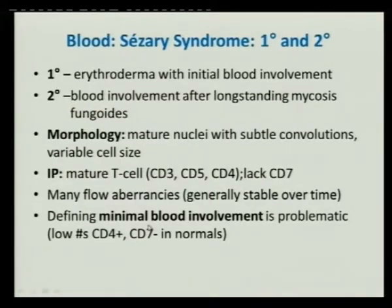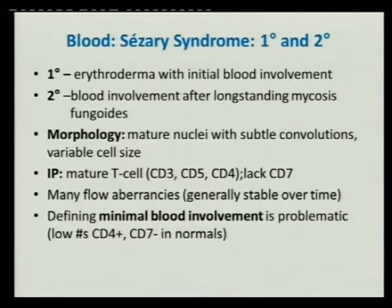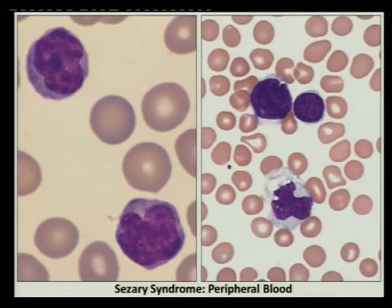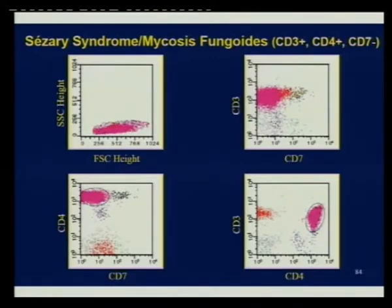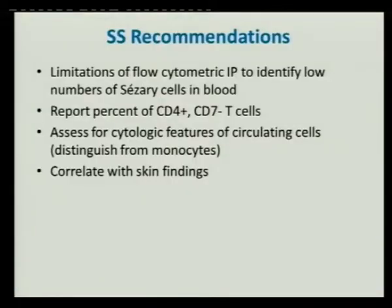Sézary syndrome can involve the peripheral blood either directly — with the person having erythroderma and peripheral blood involvement — or going through the stages of mycosis fungoides. Primary versus secondary is just terminology; the diagnosis is the same. The morphology is very recognizable: cerebriform, convoluted nuclear morphology. Phenotype is CD3-positive, lacking CD7, with helper phenotype. Typically negative for CD25 (against HTLV-associated T-cell lymphoma) and also negative for CD26.